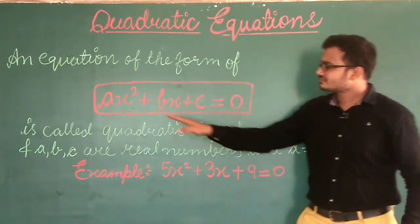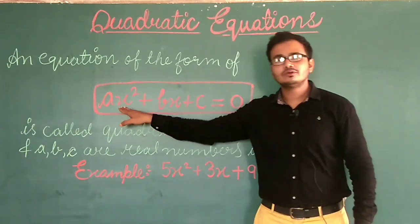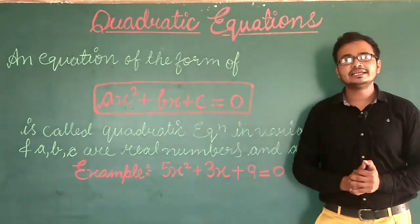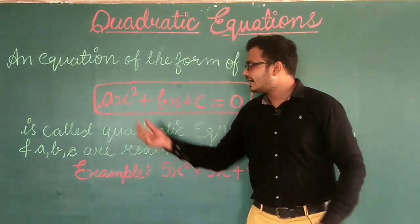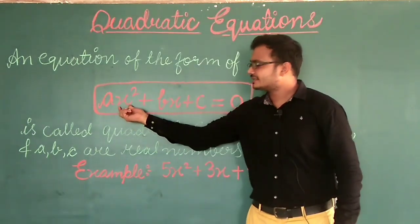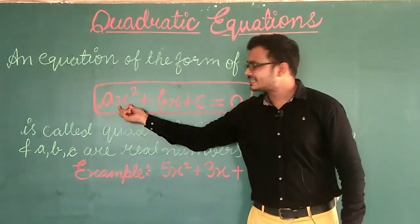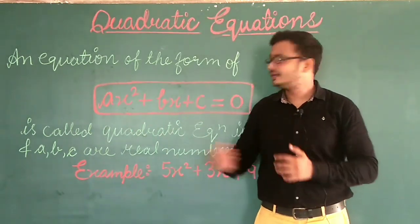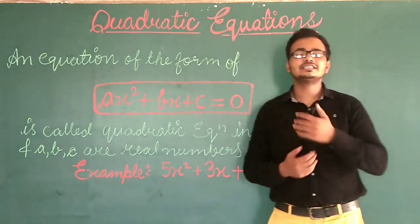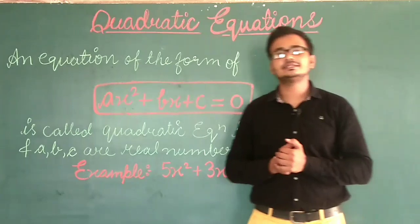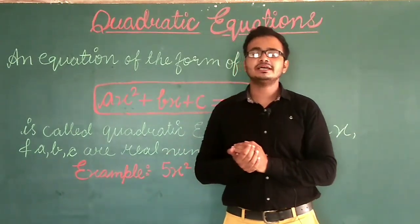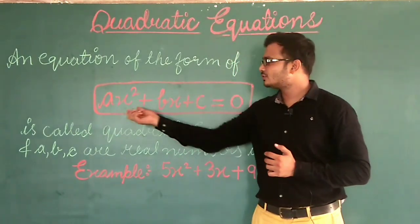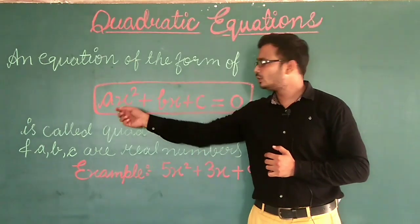Here X is a variable and A, B, C are real numbers. If we talk about X, why do we call it a variable? Because its value varies. In different questions the value of X is different, that is why we call it a variable.